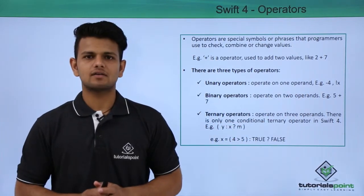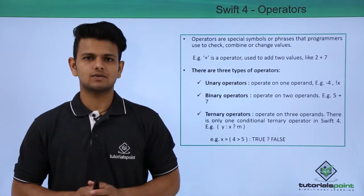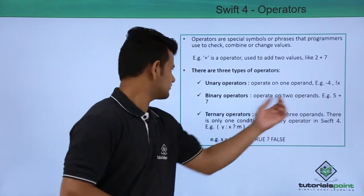Second is binary operator. A binary operator is applied on two values, for example, 5 plus 7.